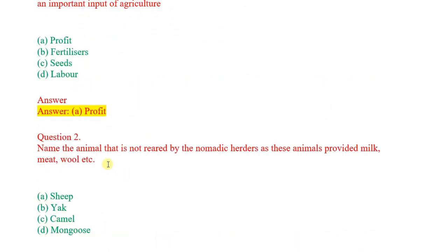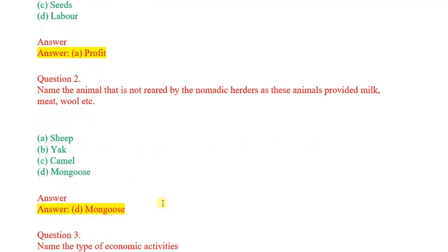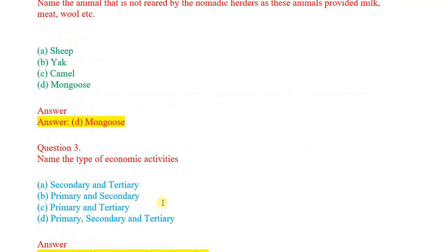Second question: Name the animal that is not reared by the nomadic herders as these animals provide milk, meat, wool, etc. Options: sheep, yak, camel, mangoes. Correct answer: mangoes.